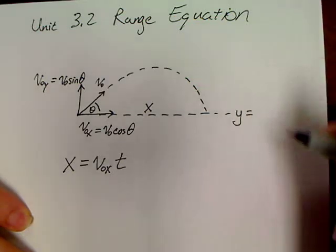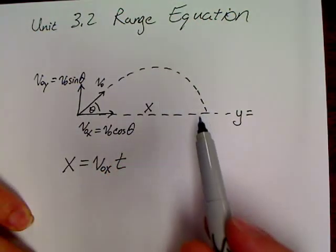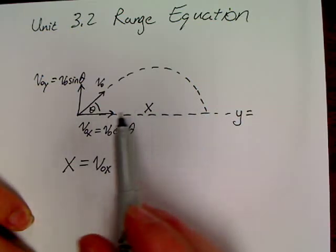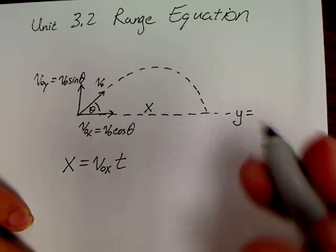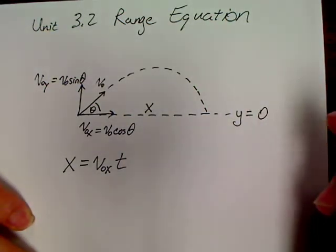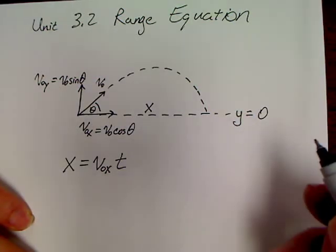What is your value for y in this problem? It starts here, goes up and back down to the exact same point. That means your y value in this problem is zero. And that's actually what's so important in working this problem, is knowing that your displacement in the y direction is zero.